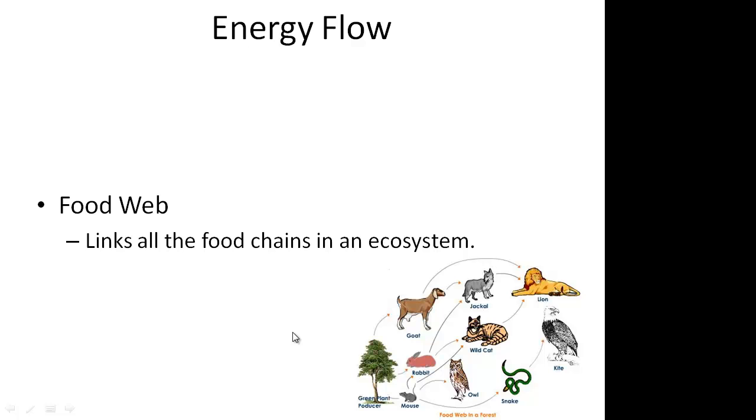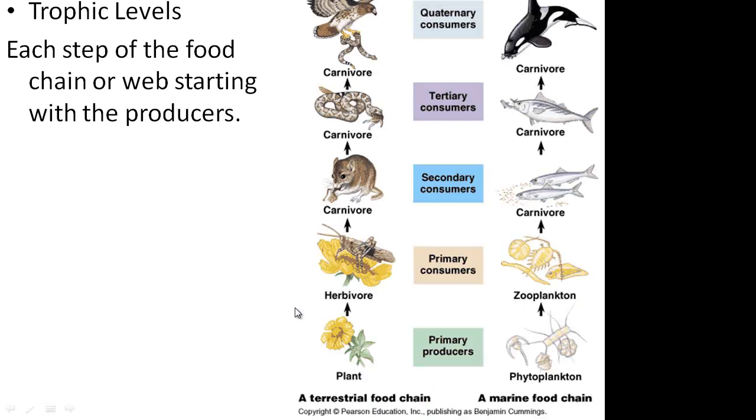We can also show our energy flow through food webs. These link all of the food chains in an ecosystem. As you see here, there are a lot of different food chains connected together. In all of our food chains and food webs, which remember, they can be either on land or marine environment, so in the water.